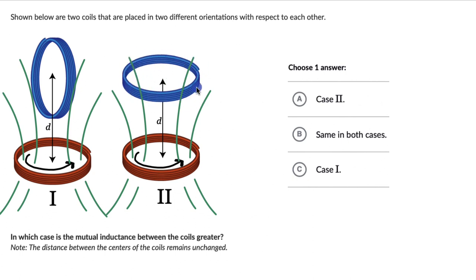As a result, the magnetic flux changes by a higher amount, which results in higher oppositional EMF and higher mutual inductance. So the right answer is Case 2.